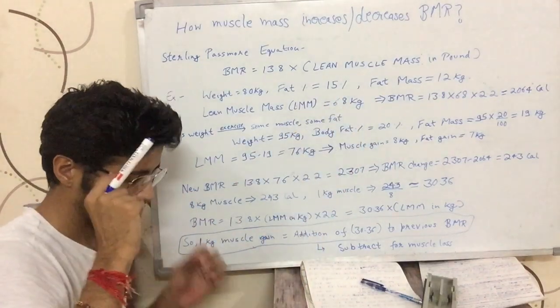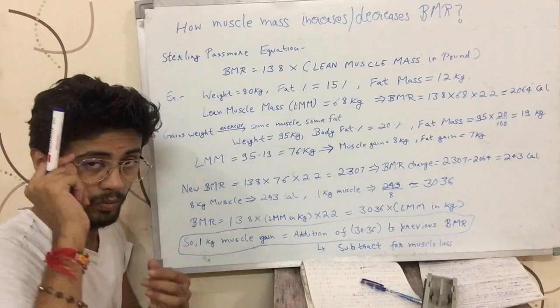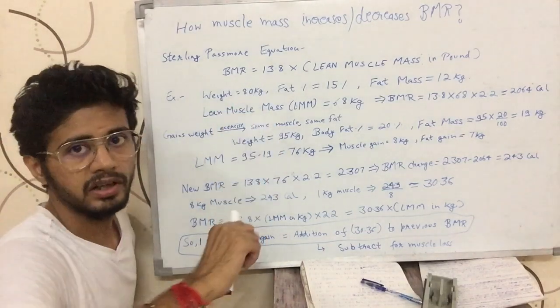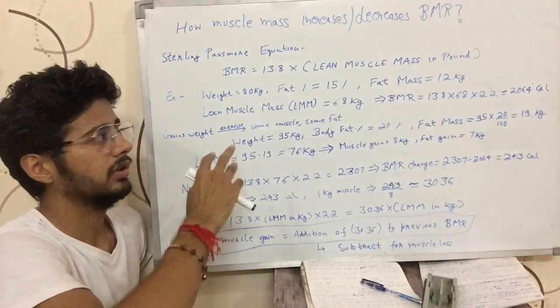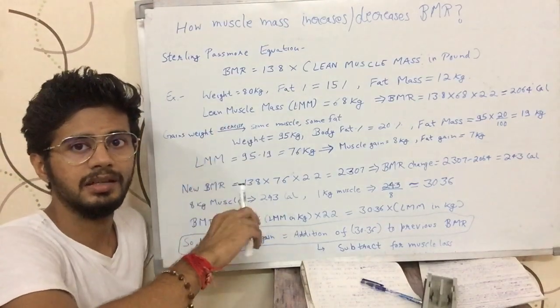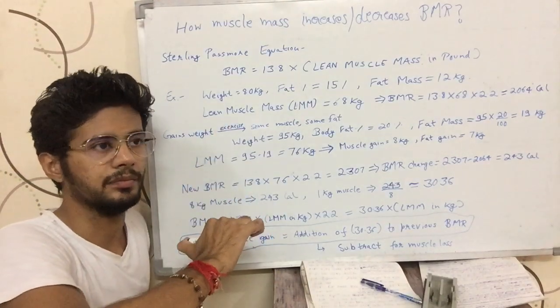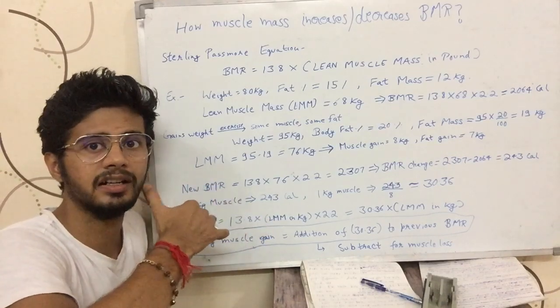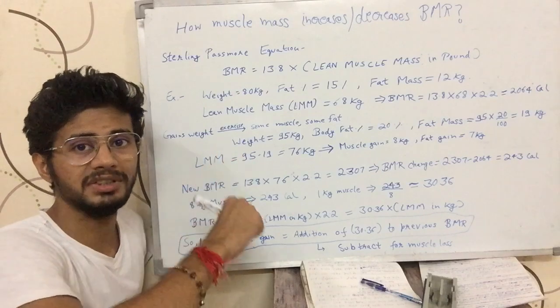Now, someone asked me in the comments, why do I use 80 kgs or 100 kgs? See, this is just an example. I take numbers divisible by 10, like 80 or 100,